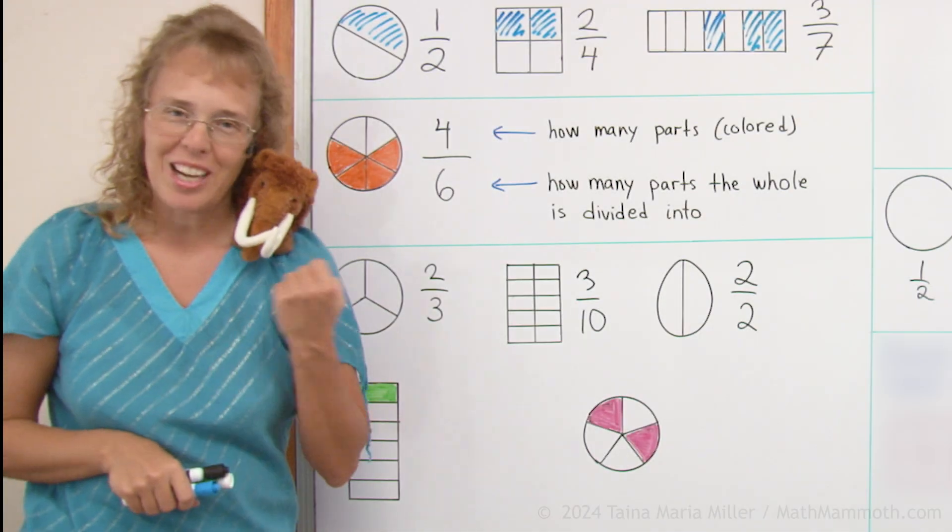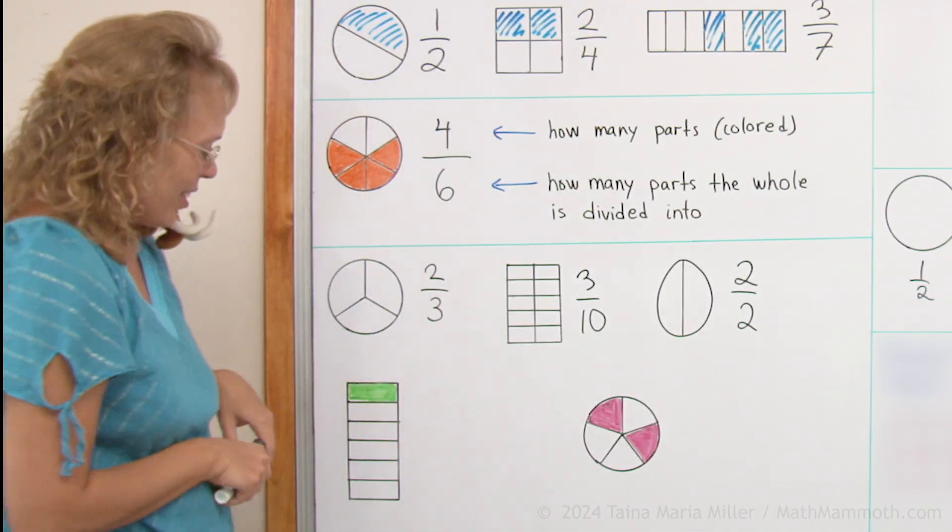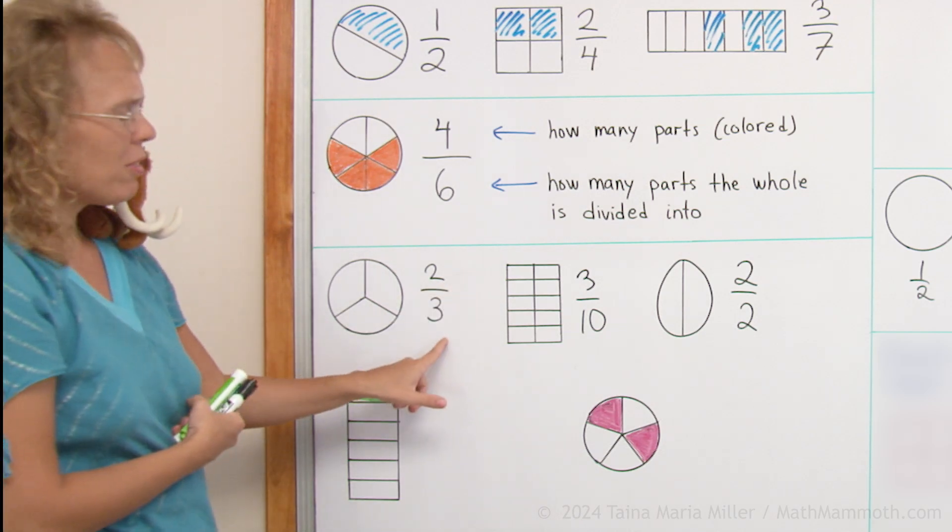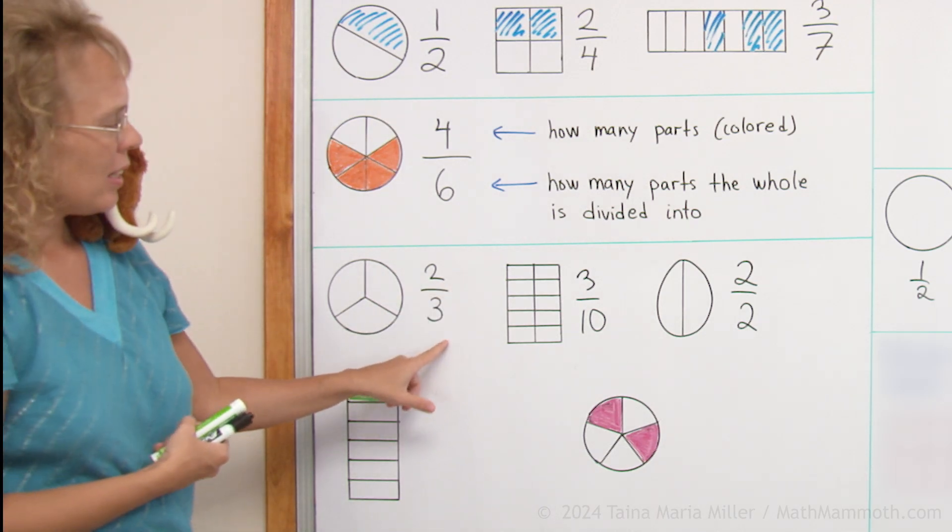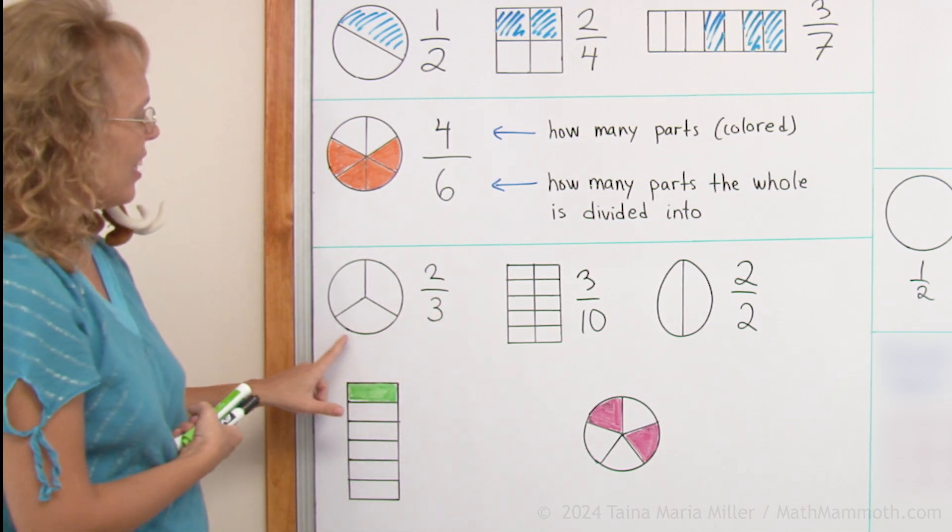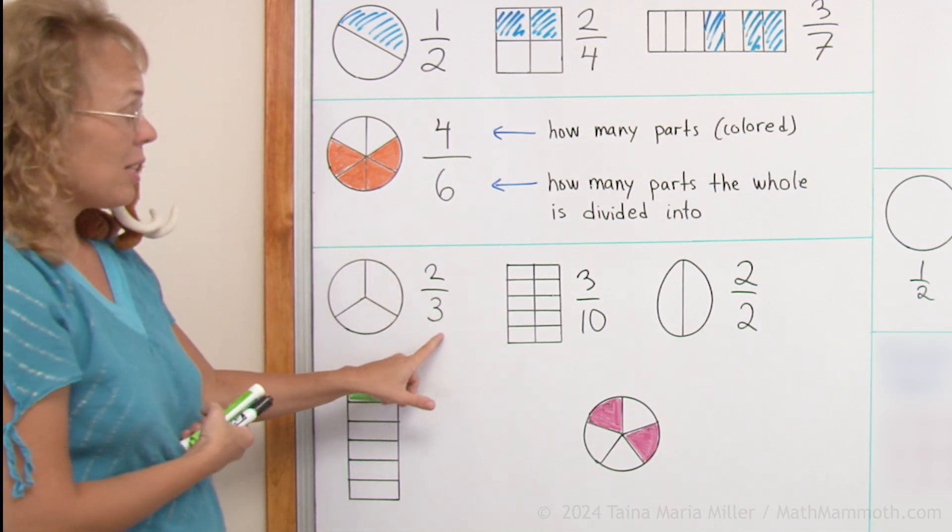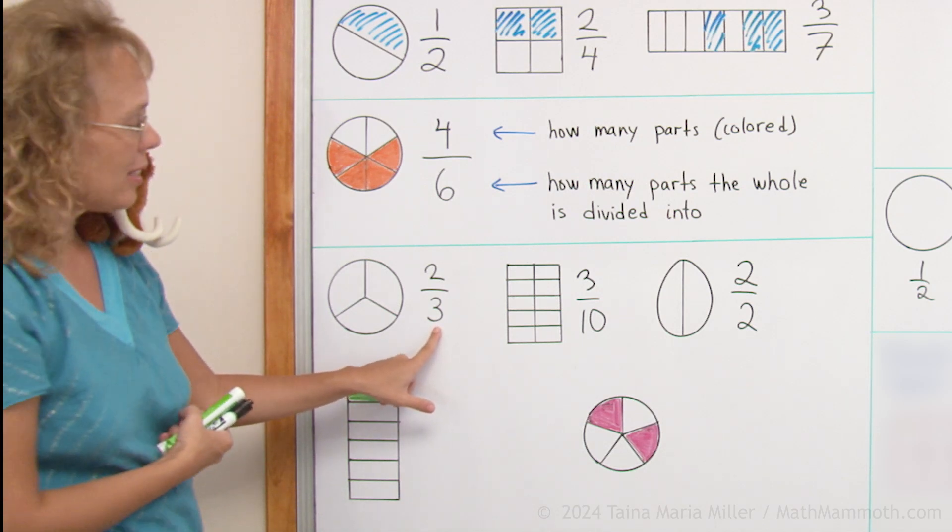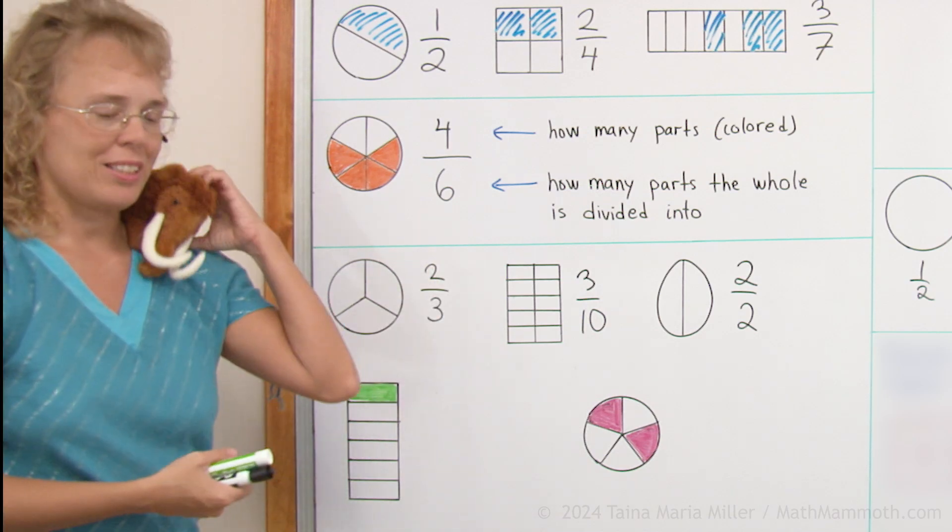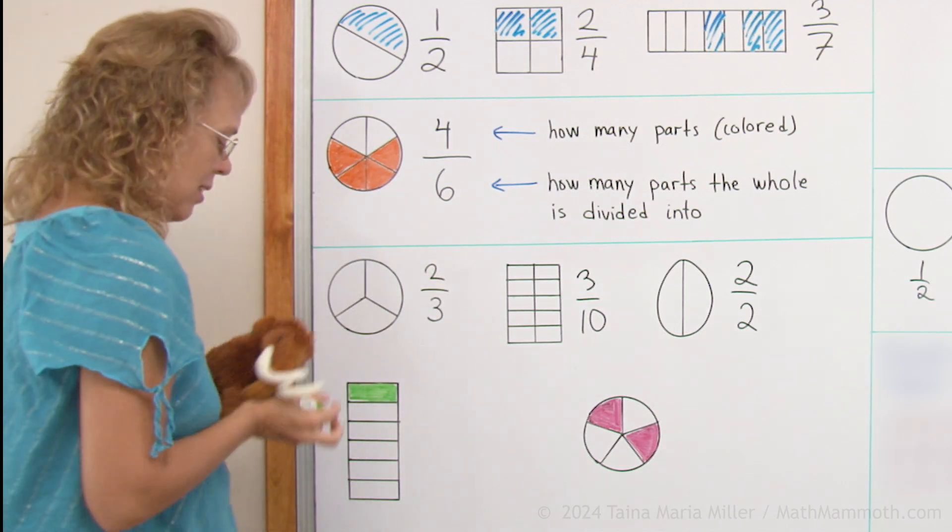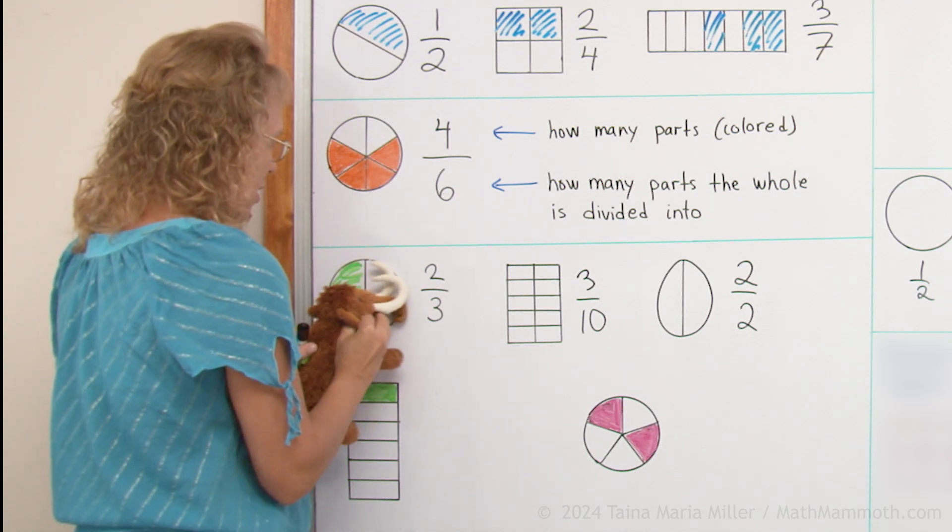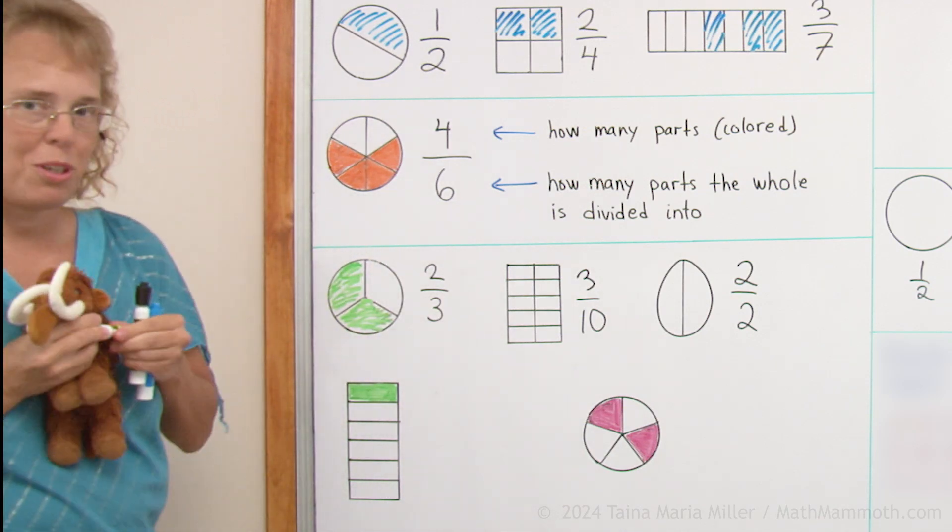And we can do some coloring. Okay Matthew, are you ready? Do you like coloring too? Sure. Here's the fraction. What fraction is it? Two thirds. Okay. The circle is divided into three parts, three equal parts. And then we're going to color how many? Two parts. Nice job, two thirds.